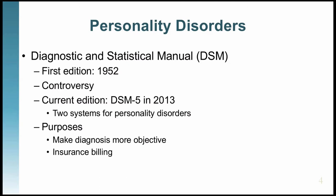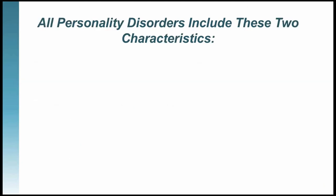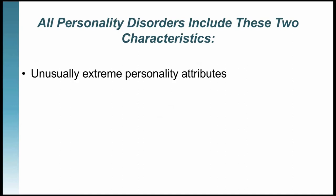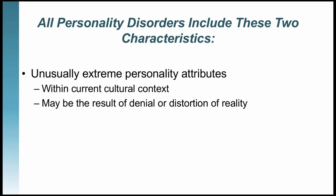What are personality disorders? There are five characteristics that describe them, but two are present in every personality disorder. The first is unusually extreme personality attributes — extreme within the current cultural and temporal context — which can include a denial or distortion of reality. For example, someone with extreme paranoia may truly believe that nobody can be trusted, which is a distortion of reality. Similarly, a person with avoidant personality disorder may believe they are completely unlovable.